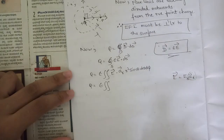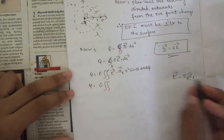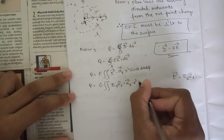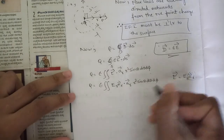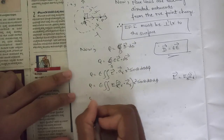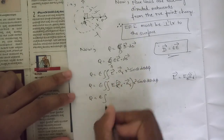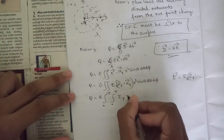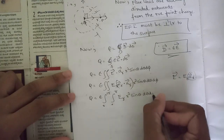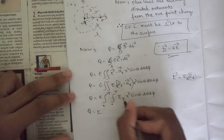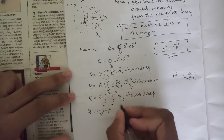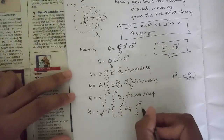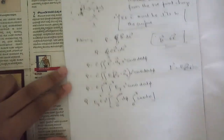Taking Er and r² as constants outside, the remaining integrals are from 0 to 2π of dφ and from 0 to π of sinθ dθ. Solving: Q equals ε·Er·r² times [φ from 0 to 2π] times [−cosθ from 0 to π], which gives Q equals ε·Er·r² times 2π times (−cos π + cos 0).